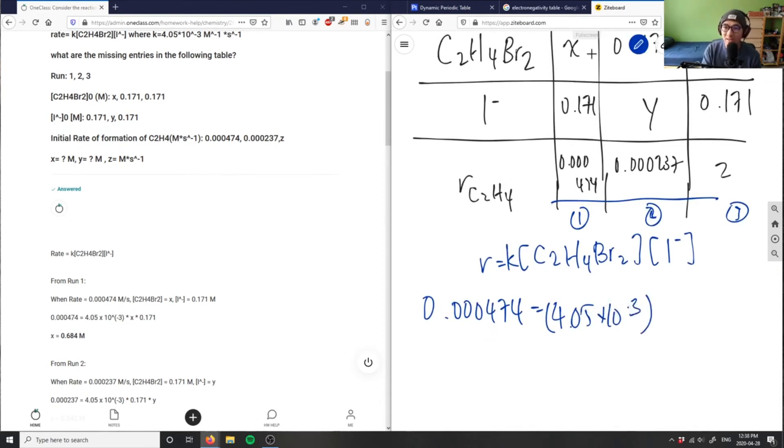I can multiply that by X here. Again, I don't know the concentration of C2H4Br2, but I do know the concentration of iodide, 0.171 here. And I can basically isolate this to get X. I'm just going to move these guys and divide everything by 4.05 times 10 to the negative 3 and 0.171.